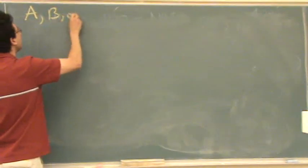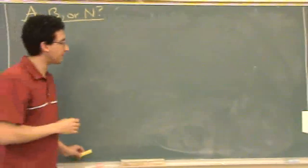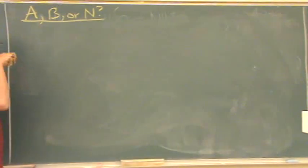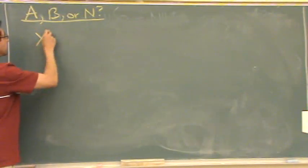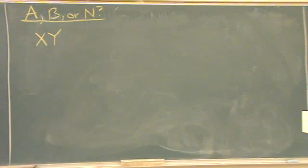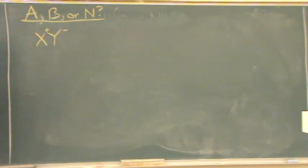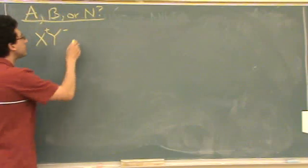Determining if something is acidic, basic, or neutral. Let's do the concept first on the left side. What we're going to give you is ionic species — let's say XY, whatever it is. The easy way to do this is just to look at it separately as its ions: X plus and Y minus. And what you've got to determine, there are really going to be four cases.